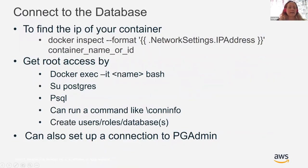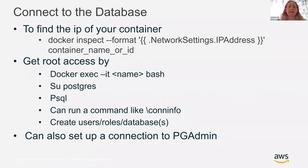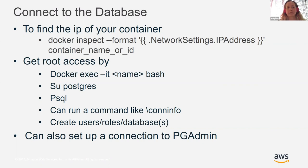Once the container, database, and network are up and running, the next step is to connect to it. When you create the container it tells you the IP, but if you forget, you can run `docker inspect` with your container name or ID and it will tell you the IP address for that container.